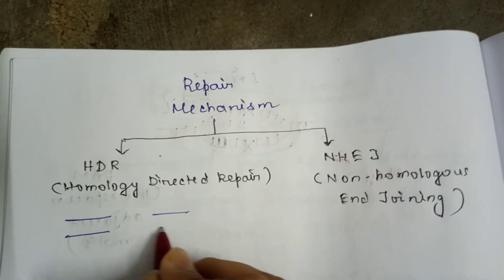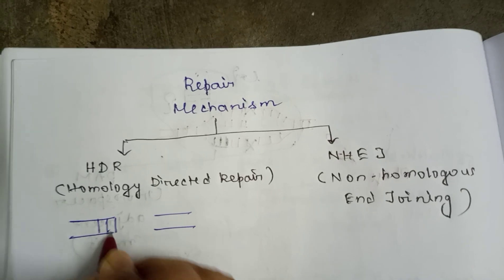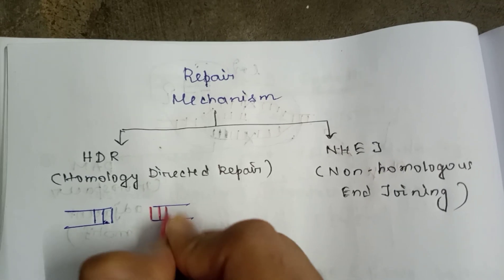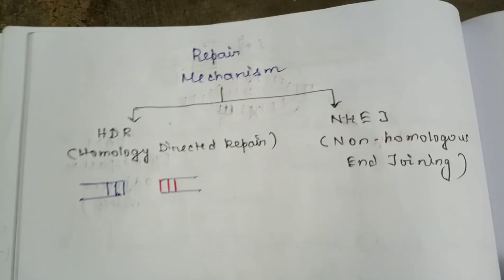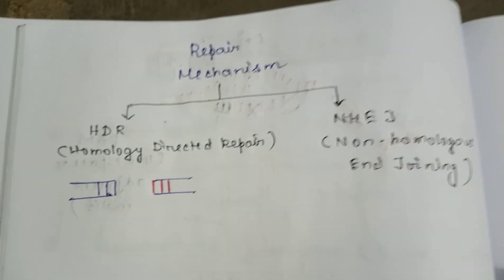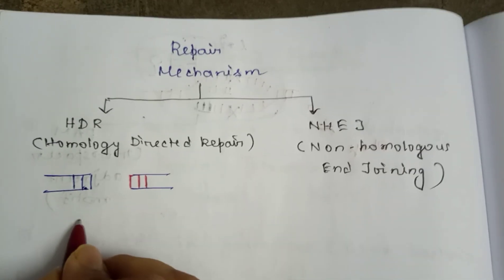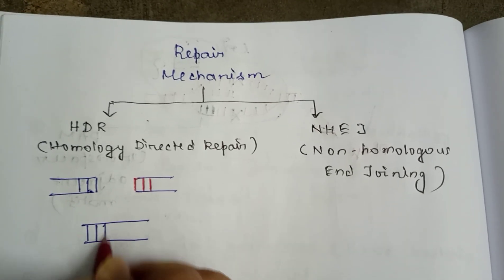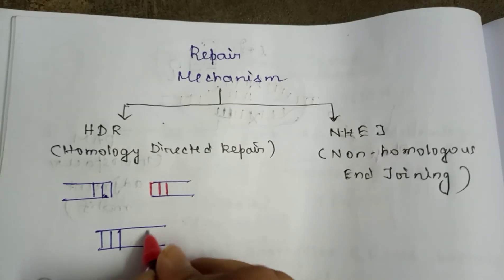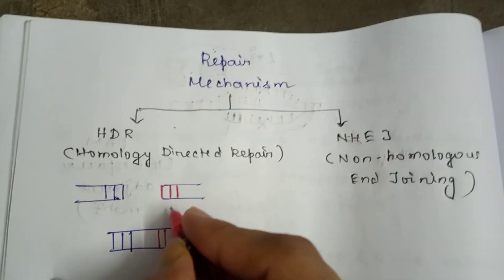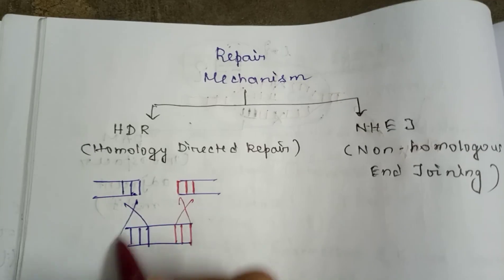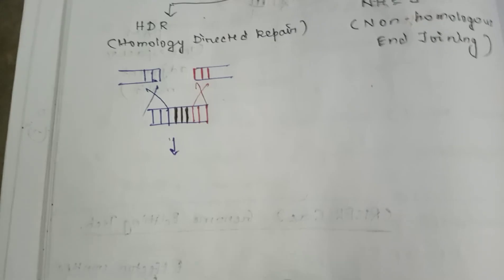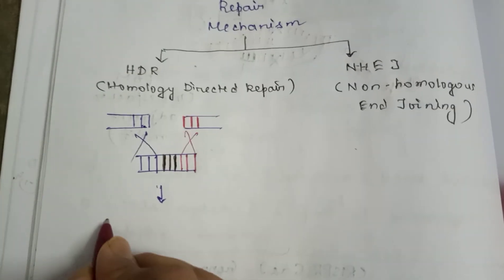Homology directed repair is like this: Let's check the diagram. This is the edited product of the viral DNA. Now there will be one donor DNA.